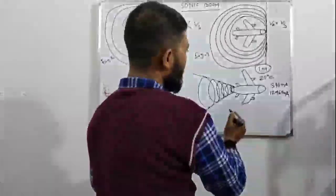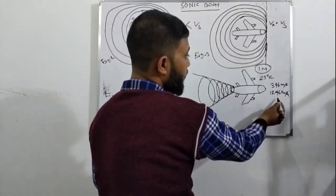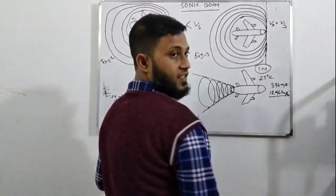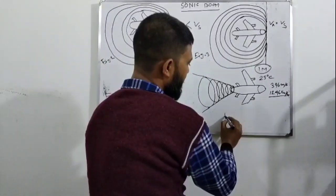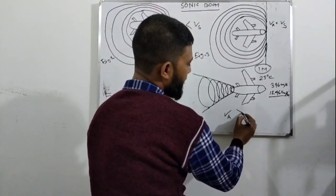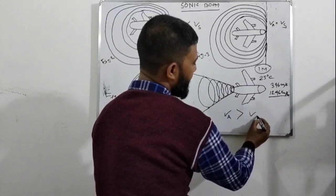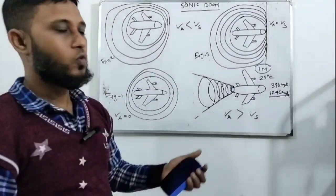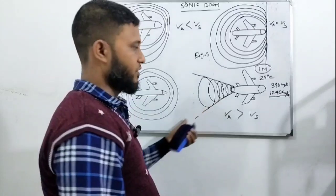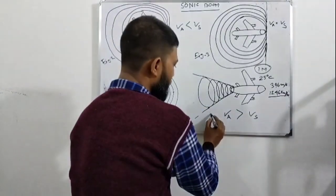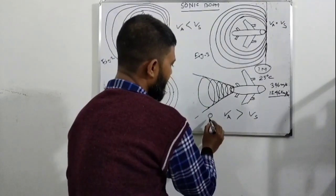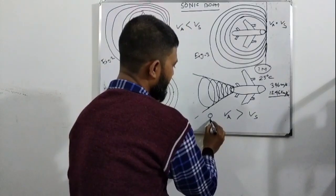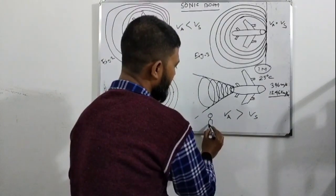And when the aircraft speed is more than 1246 kilometer per hour, that means VA is greater than VS, at that time, sound waves create this formation. When the aircraft exceeds the speed of sound, these spatial waves combined and form a shock wave, which travels forward from the generation or release point.